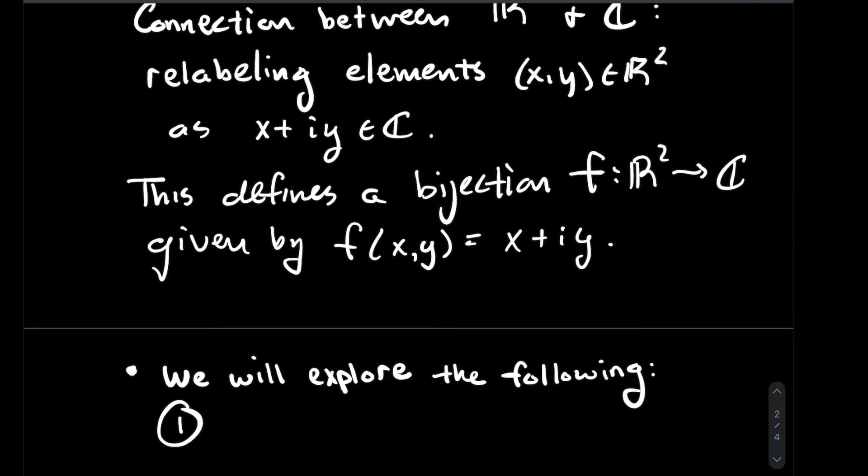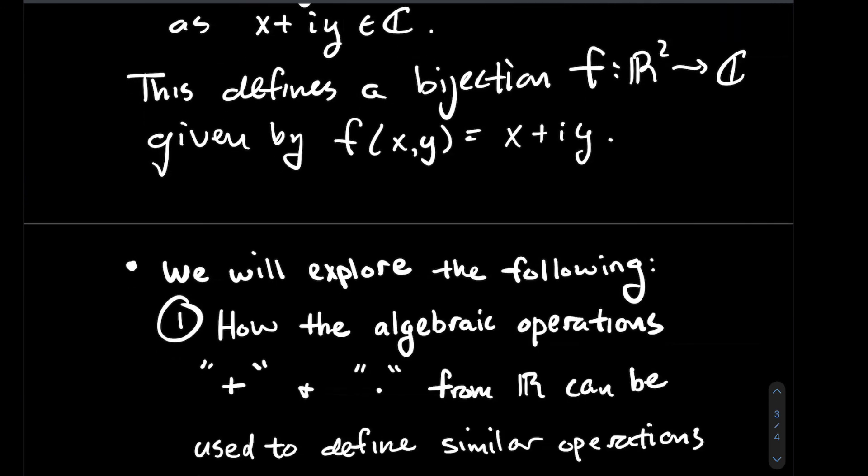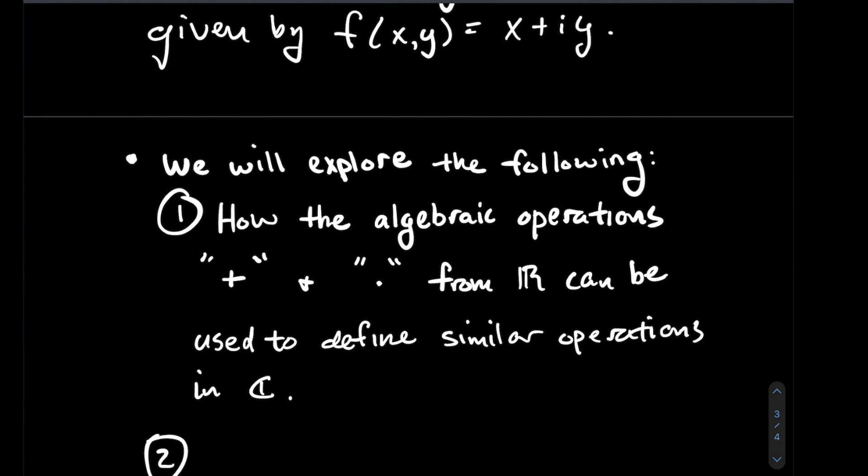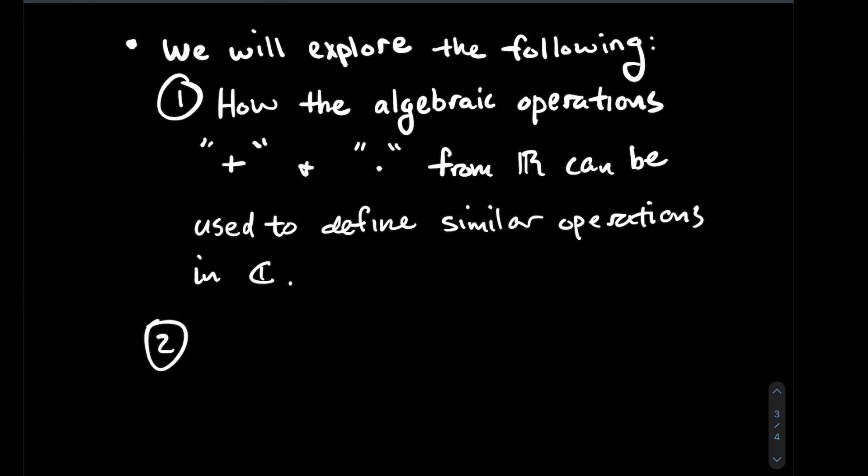In the series of videos that follow, we're going to explore two questions. The first question is: how do the algebraic operations of plus and times from the real numbers, how do the ways that I add and multiply real numbers, inform me of a way to do similar operations to complex numbers?